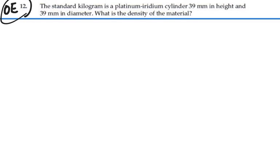To find the density we need to know the volume of this standard cylinder. So let's think about this cylinder. It's 39 millimeters in diameter and the height is also 39 millimeters.